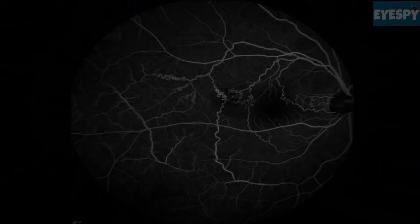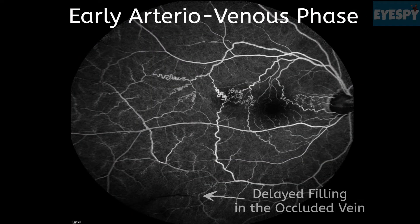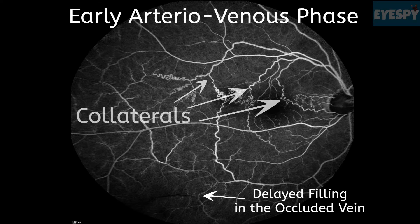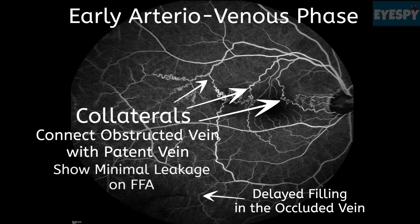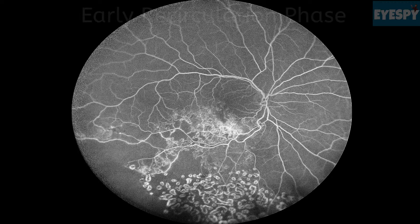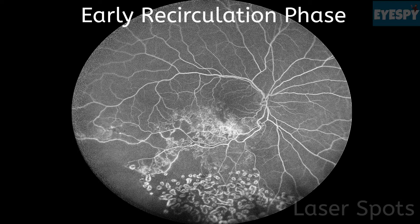On fundus fluorescein angiography (FFA), in the early arteriovenous phase, delayed filling of dye in the occluded vein is evident, along with the presence of collaterals which connect the obstructed vein to the patent vein and show minimal leakage.